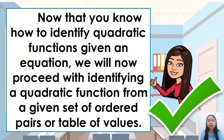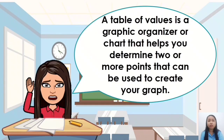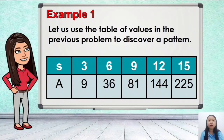Now that you know how to identify quadratic functions given an equation, we will proceed with identifying a quadratic function from a given set of ordered pairs or table of values. A table of values is a graphic organizer or chart that helps you determine two or more points that can be used to create your graph. Let us use the table of values from the previous problem to discover a pattern.